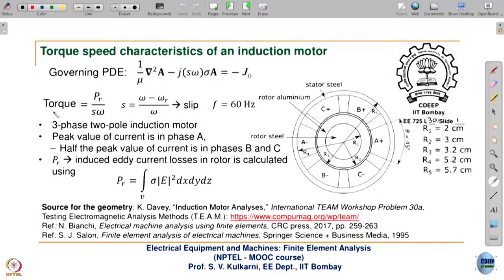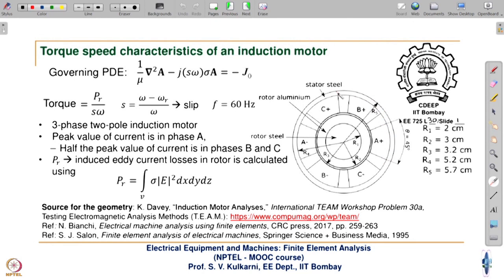From induction motor theory, torque is given by rotor losses divided by s times omega. Looking at this geometry, the rotor is steel and we are considering it as solid iron because the slip is very small, so the induced frequency is very small, and the eddy current losses will be quite small. So we can consider this rotor as solid — it is not laminated. Whereas the stator, the outermost part, is laminated steel, but here we are not interested in loss calculation, so we will not be defining conductivity for the stator.